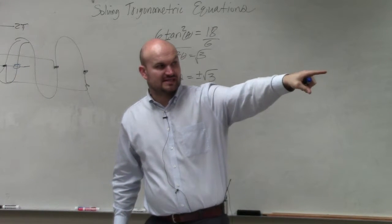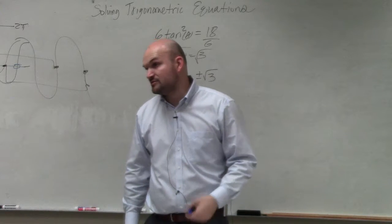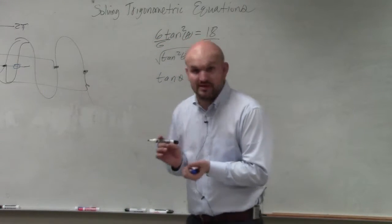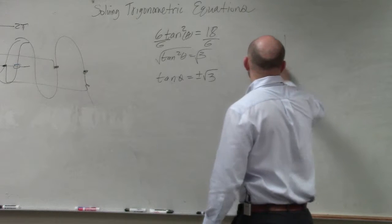The reference angle pi over 6 gives us square root of 3 over 3, right? So therefore, it should be pi over 3 is going to be the best one. And I can just verify that.